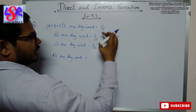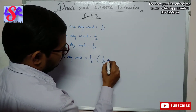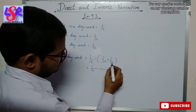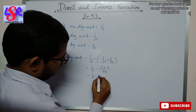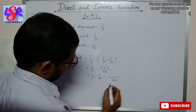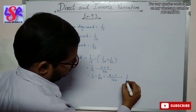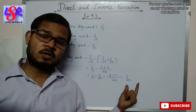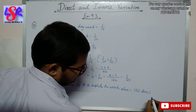To find A's one day work, we subtract the sum of B's and C's one day work from the combined one day work. So this is 1 upon 15 minus (1 upon 30 plus 1 upon 40). Taking LCM of 30 and 40 as 120, we get 4 plus 3 upon 120 = 7 upon 120. Then 1 upon 15 minus 7 upon 120, taking LCM of 15 and 120 as 120, gives 8 minus 7 = 1 upon 120. So time taken by A to complete the work is 120 days.